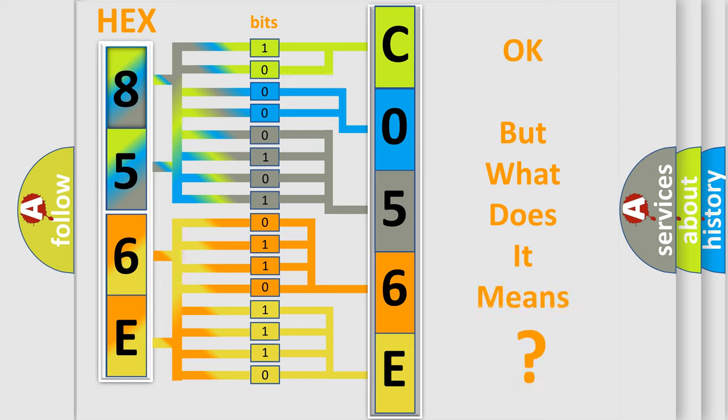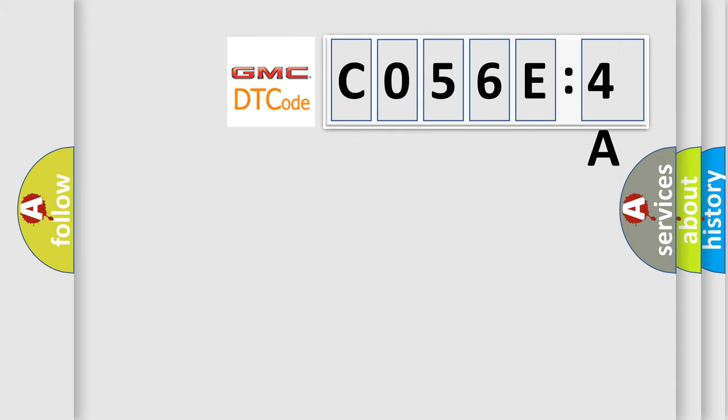The number itself does not make sense to us if we cannot assign information about what it actually expresses. So, what does the diagnostic trouble code C056E:4A interpret specifically for GMC car manufacturers?